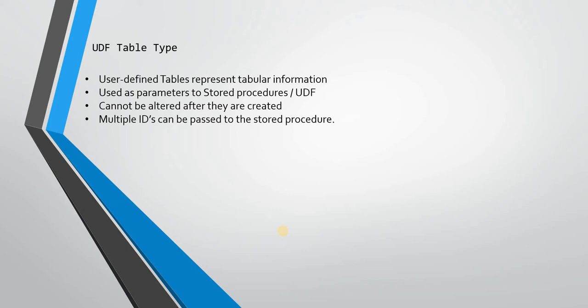You will have to drop and recreate them. Also, if any single reference is still present with the user-defined table type, you cannot even drop it. You will have to drop the dependent object first, and then you can drop and recreate the user-defined table type. You can also pass multiple user-defined table types to a stored procedure, just like any other data type input parameter, if there is a business requirement.